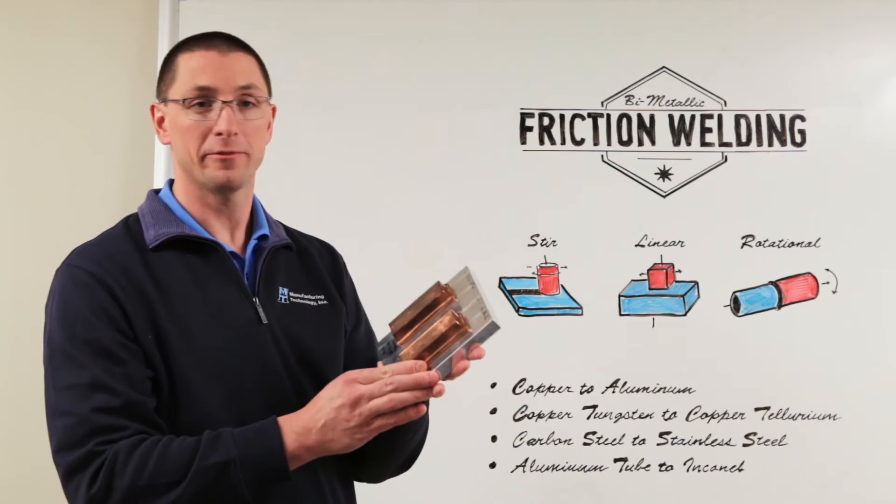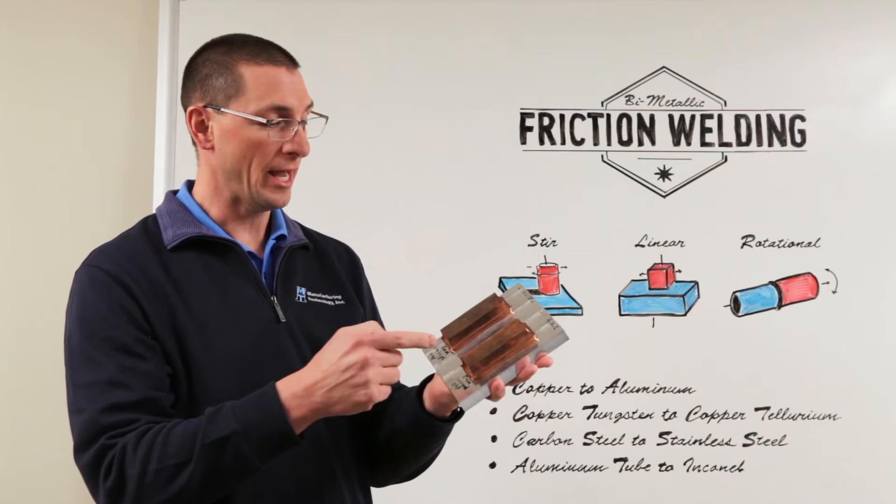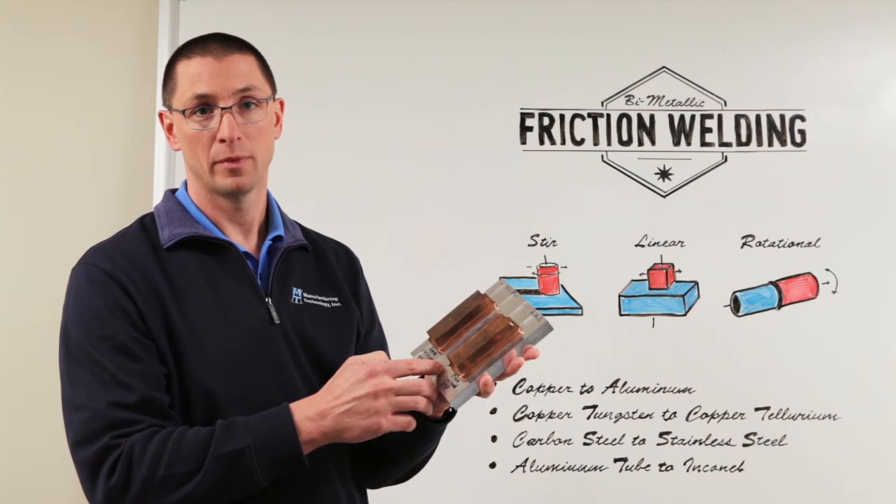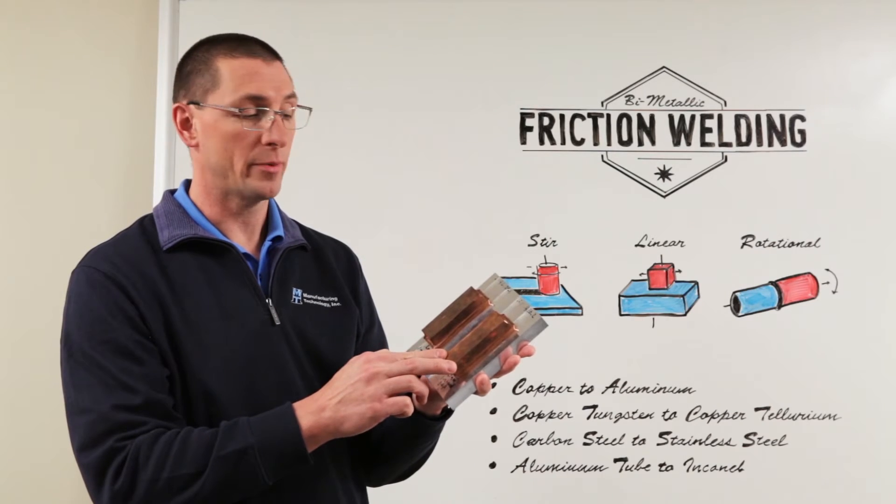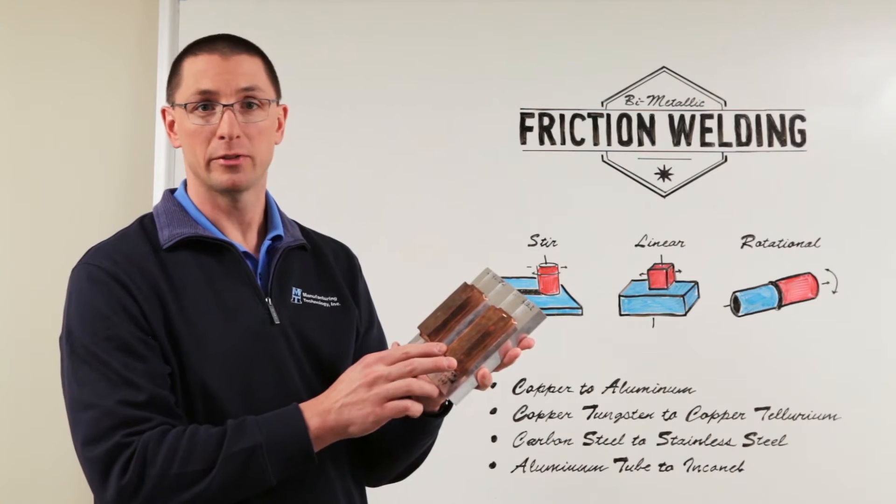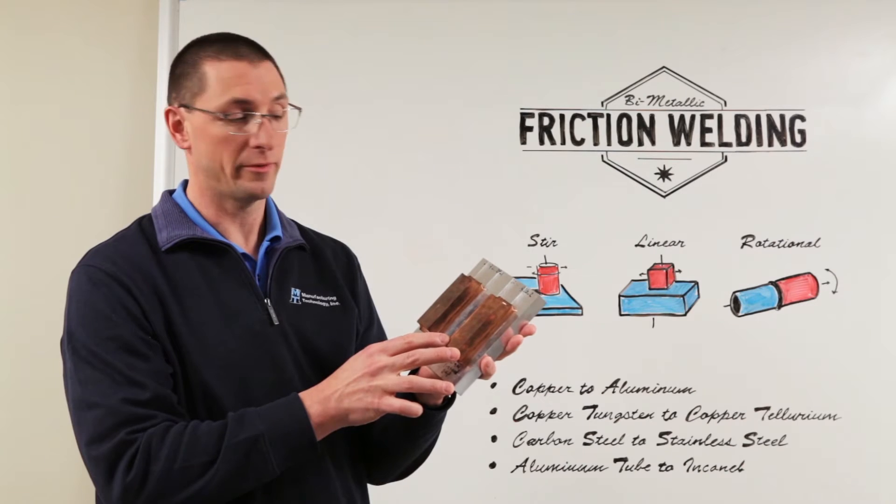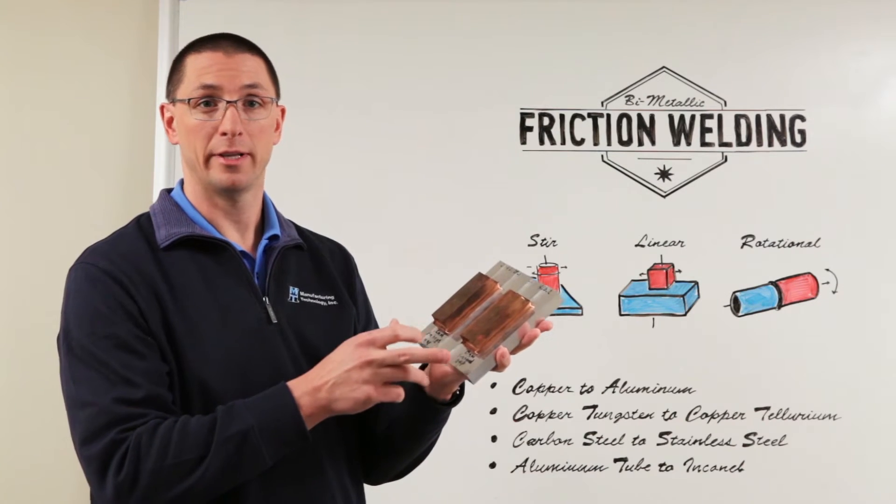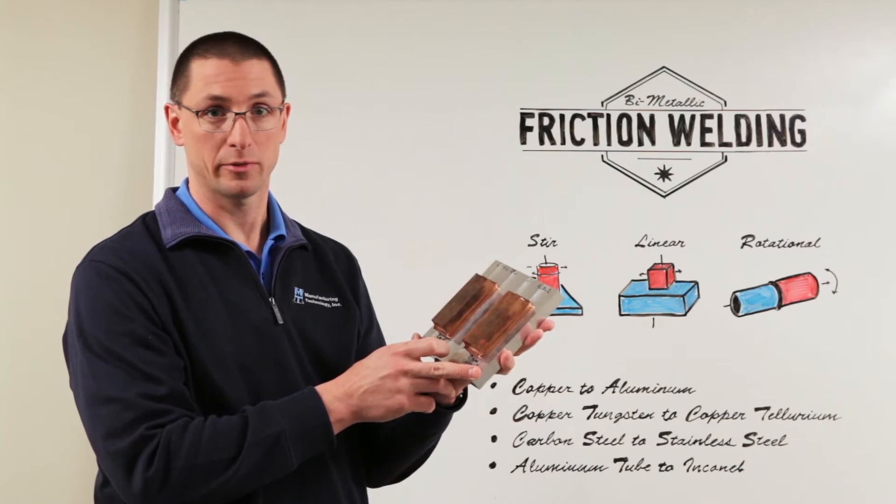One example is this linear friction welded heat plate where we have copper joined to aluminum. We want the heat transfer properties of copper, but copper doesn't mount to other surfaces very well or very rigidly, so we weld it to the aluminum so the aluminum can be used as a mounting surface.